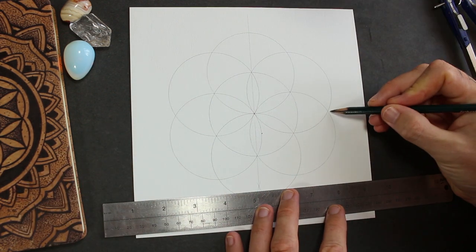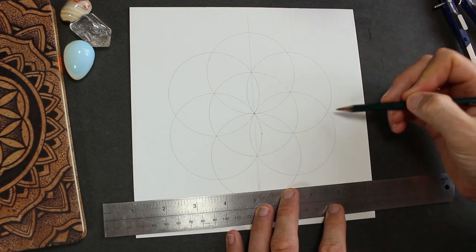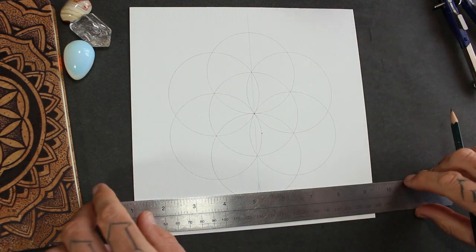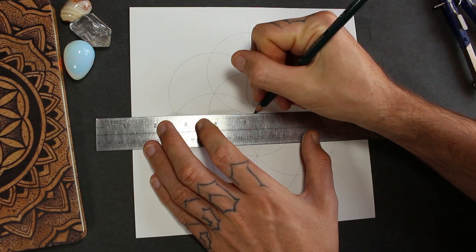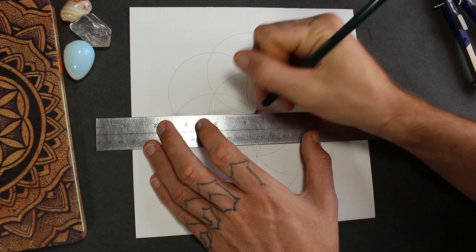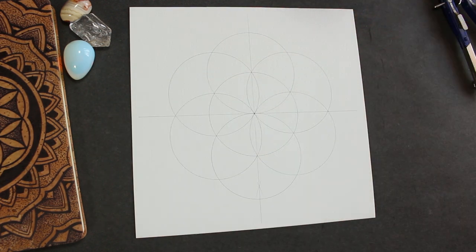I'm going to use these two points on the left and the right to find the horizontal line. Make sure it goes through the middle. Okay.